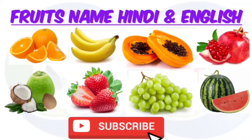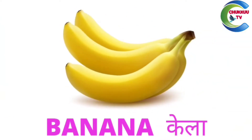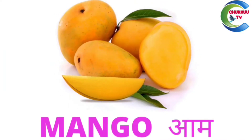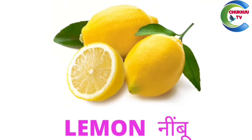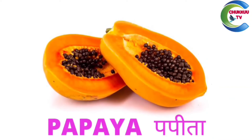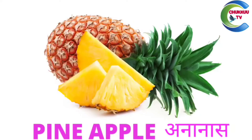Today we are going to learn fruit names in English and Hindi. Apple - seb, banana - kela, mango - aam, lemon - neembu, orange - santra, papaya - papita, pineapple - ananas.